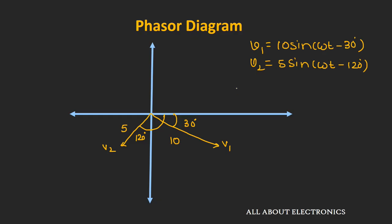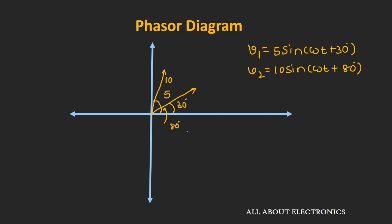On this Phasor diagram, the anticlockwise direction is known as the leading direction. As you can see, V1 is leading V2 by 120 − 30 = 90 degrees, so V1 is leading V2 by 90 degrees. Similarly, in the first example, the V2 signal is leading the V1 signal by 80 − 30 = 50 degrees.